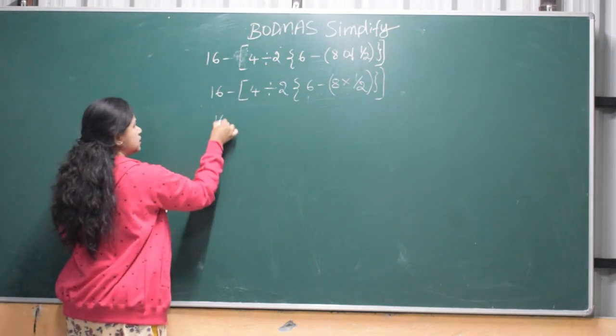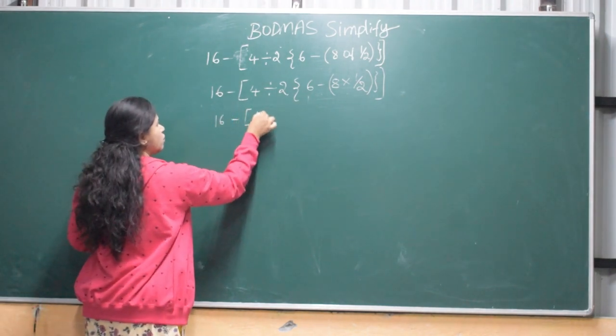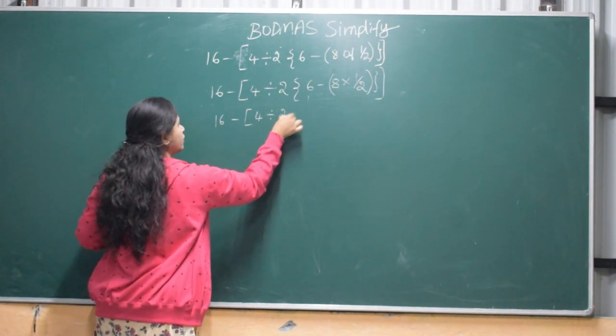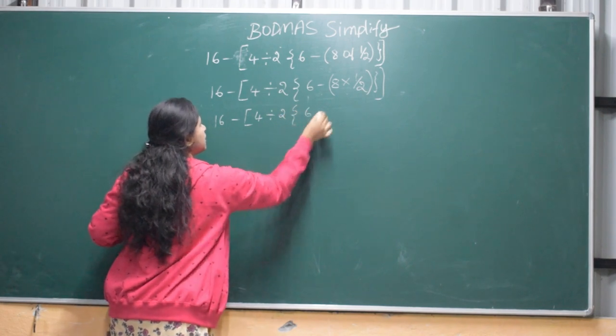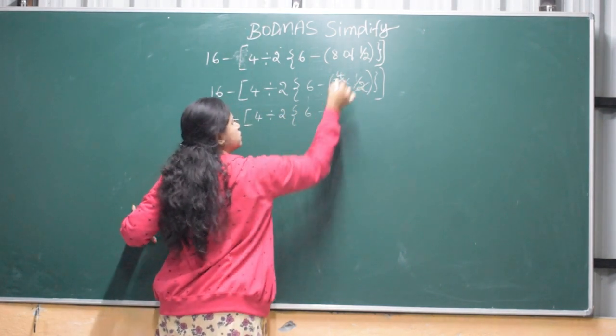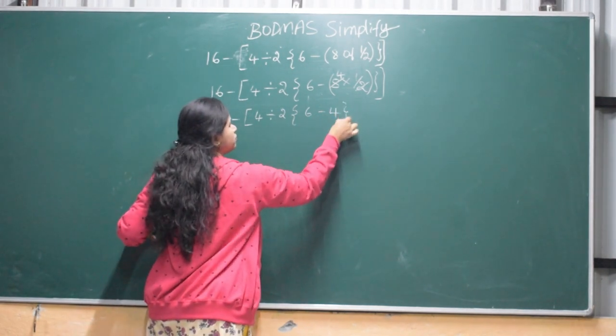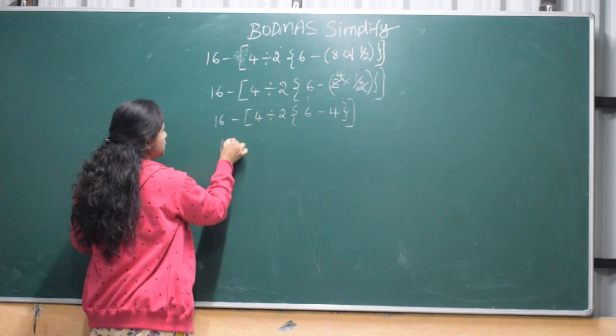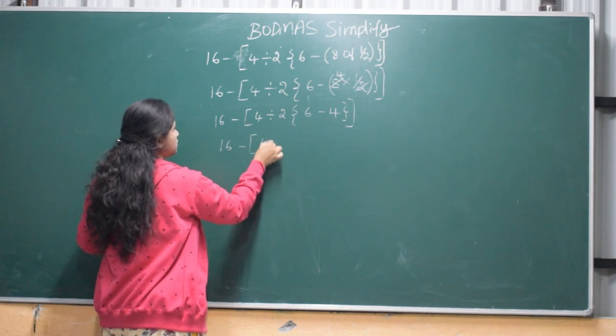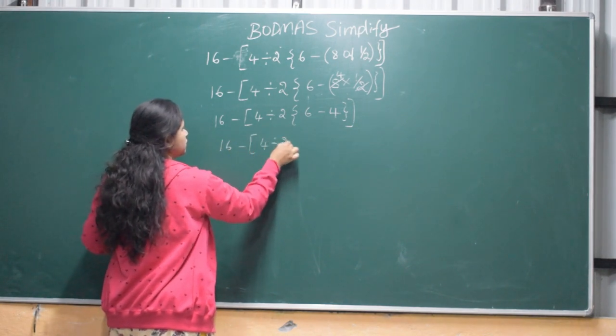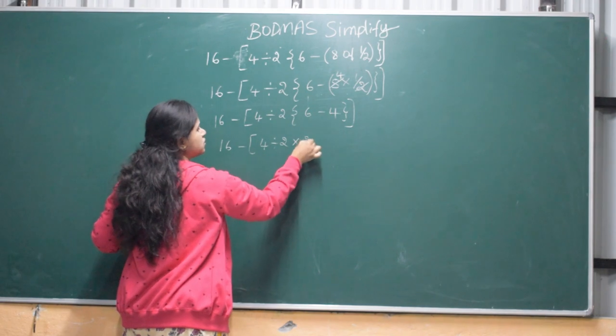So it is 16 minus 4 divided by 2, 6 minus. 2 ones are, 2 fours are 12. We are going to cut off. 16 minus 4 divided by 2. 6 minus 4 is 2.